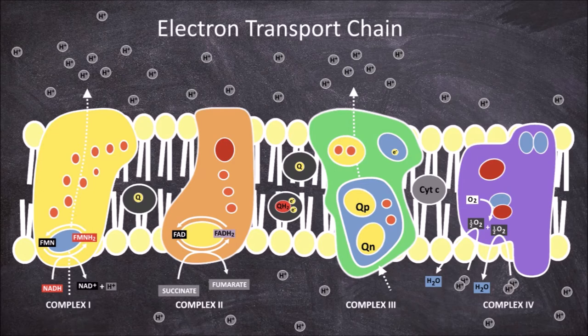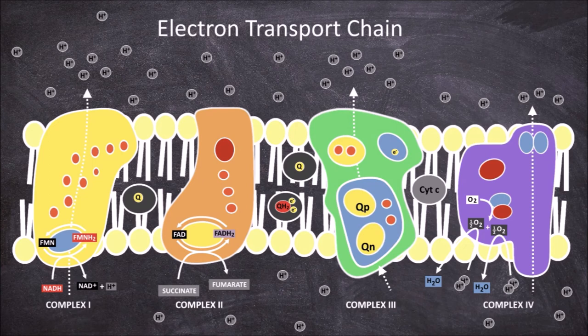Complex 4 is a proton pump. As the electrons move to lower energy states through complex 4, two hydrogens are pumped through. This ends the electron transport chain, leaving a high concentration of hydrogen protons in the intermembrane space and a low concentration in the matrix. This concentration gradient is vital for the production of ATP in the next step called chemiosmosis.